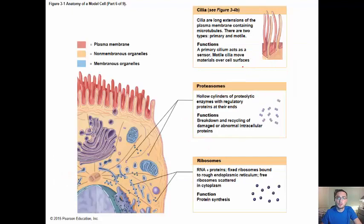Cilia, they can help to move the cell. Proteasomes, these are enzymes with regulatory proteins at their ends. They break down and recycle any damaged or abnormal intracellular proteins. Ribosomes, they're all about building proteins. When we talk about protein synthesis, we're talking about the ribosomes. They are what synthesize proteins.